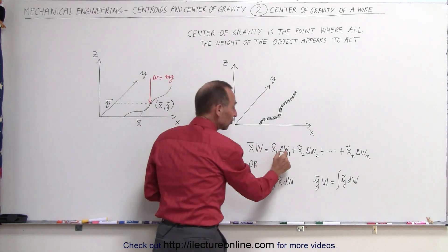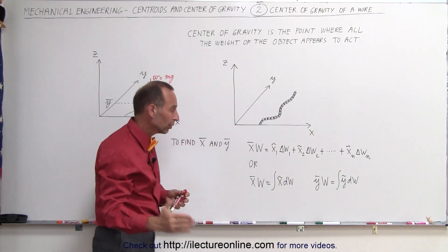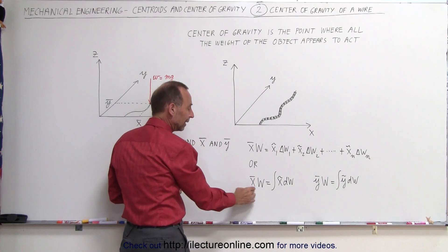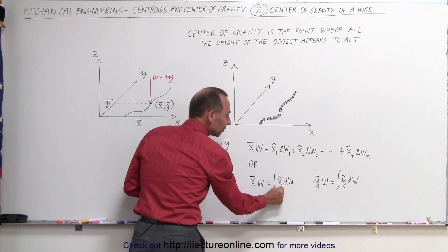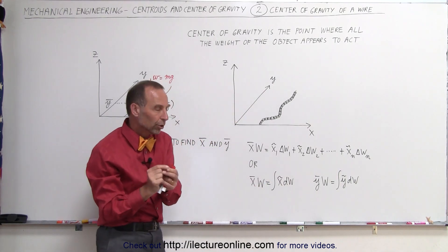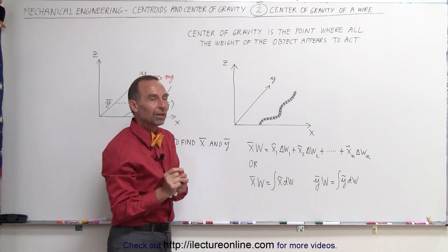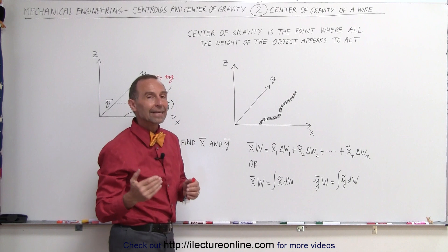And of course if we make those little snippets small enough and we add them all up that's exactly the same as the integral. So we can write that the X coordinate of the center of gravity of the whole wire times the weight of the wire is equal to the integral of the X coordinate of the center of gravity of each little piece times the weight of that each little piece. Of course in the limit let delta W go to zero that is then indeed the integral.